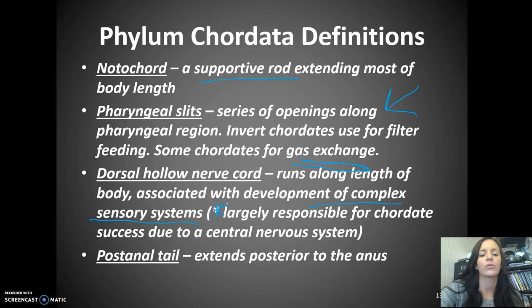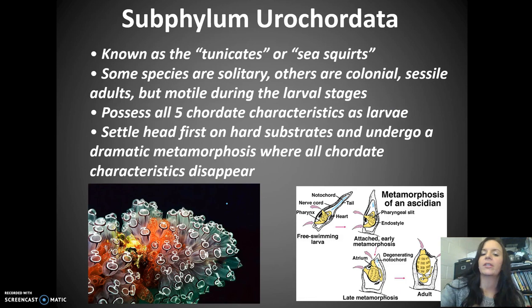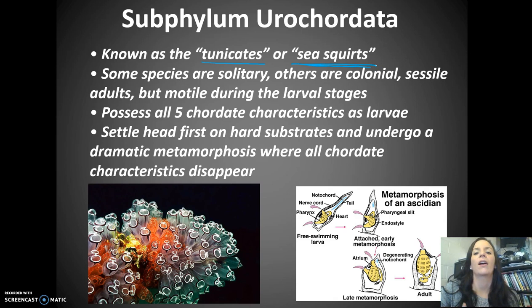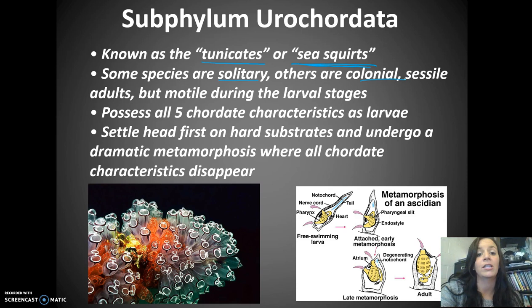And finally, a post-anal tail. Subphylum Urochordata are known as the tunicates or sea squirts. They may look more like jellyfish, but they are actually closer to us in relation. Some species are solitary, others are colonial. They are sessile as adults, meaning they don't move, but they are mobile during their larval stages. They have all five chordate characteristics as larvae, which is why they are categorized as chordates.